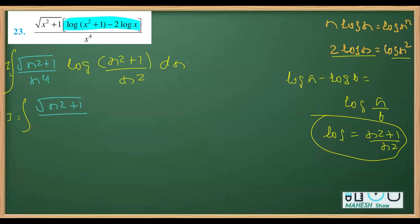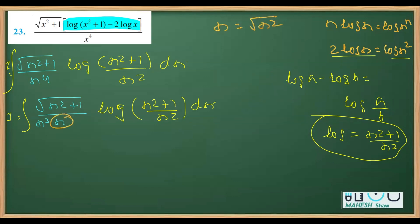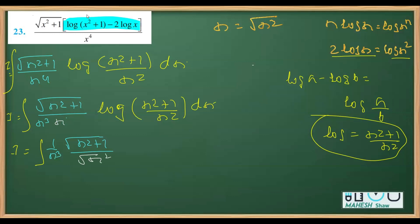I can write x⁴ as x times x³. You'll soon understand why I'm doing this in the very next step. Then I'll replace x with √(x²) — that is, x is the same as the square root of x². So what we get is I equals the integration of 1 over x³ times √(x² + 1) over √(x²).